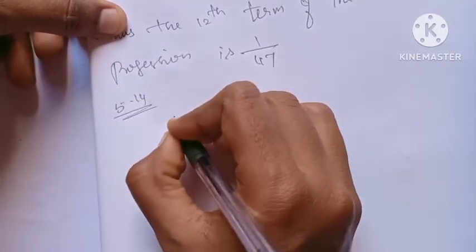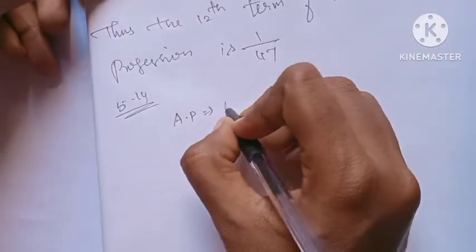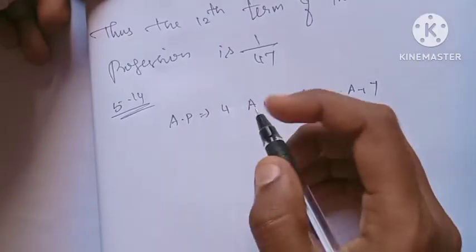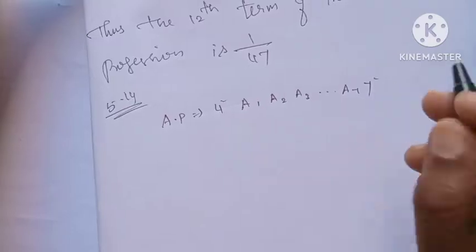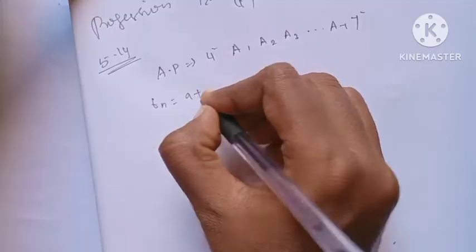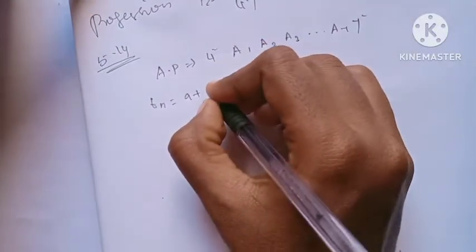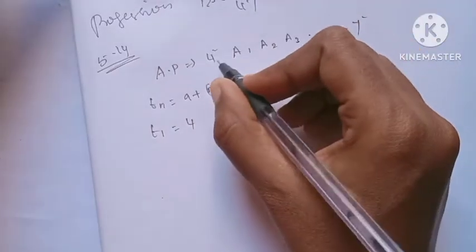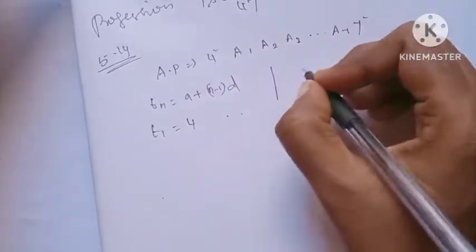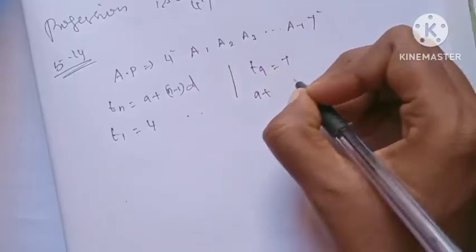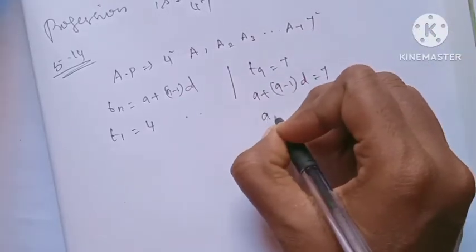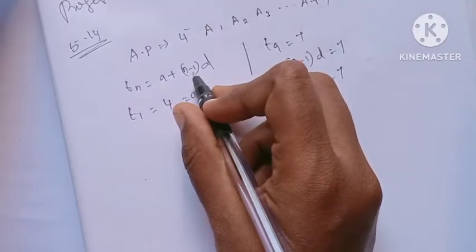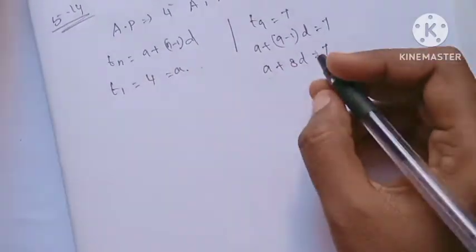In AP, the sequence is 4, A1, A2, A3, up to A7. The formula is TN = A + (N minus 1) into D. T1 is the first term, which is 4. T9 is the ninth term. So A + (9 minus 1) into D equals 7. That gives us A + 8D equals 7. Since A equals 4, we get D equals 3 by 8.